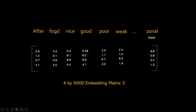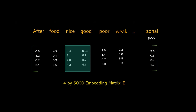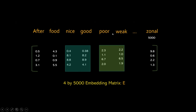This is how the word embedding vector gets generated, eventually producing a 4 by 5,000 embedding matrix for all tokens in the food review classification problem. Looking at the results: the embedding vectors for 'nice' and 'good' are very close to each other, clearly representing that these two words are similar. Similarly, 'poor' and 'weak' are two closely matched words. This is how the embedding matrix captures the similarity of words effectively.